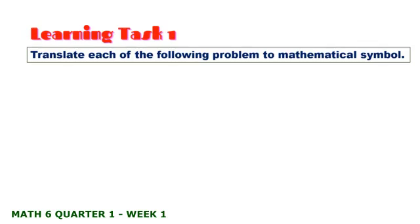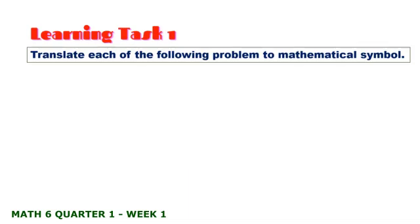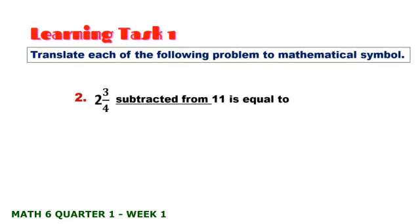Learning Task 1: Translate each of the following problems to mathematical symbols. Number 1: 7 is added to the sum of 5 and 6 tenths and 6 and 7 tenths. Number 2: 2 and 3 parts subtracted from 11 is equal to — the mathematical symbol is 11 minus 2 and 3 parts.